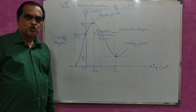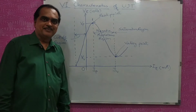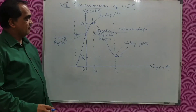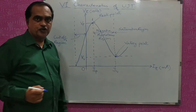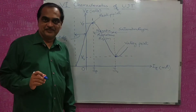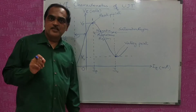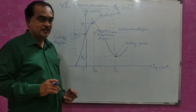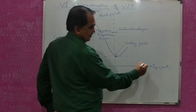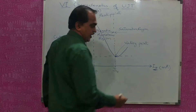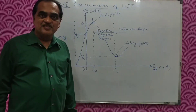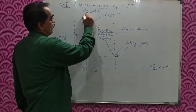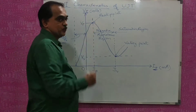Dear students, today we will see VI characteristics of UJT. Now if you see this graph over here, this graph is drawn voltage versus current. One speciality over here is what we do with our normal graph: the x-axis is taken for the current — the emitter current IE is going to represent the x-axis, whereas the y-axis is going to represent emitter voltage VE.